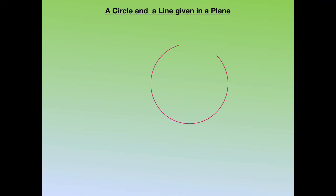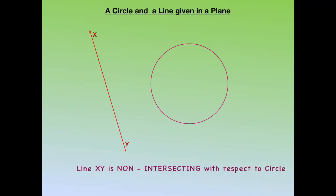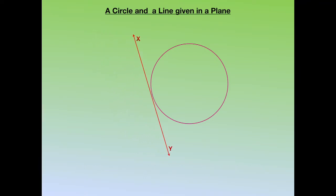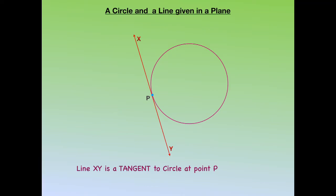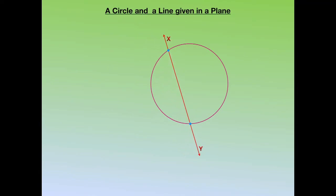If in a given plane there is a circle and a line with no intersection, we say line XY is non-intersecting with respect to the circle. If the line is brought closer so that it touches the circle at only one point, then we say line XY is a tangent to the circle at point P. If we further move this line to intersect the circle at two different points, then we say line XY is a secant to the circle.